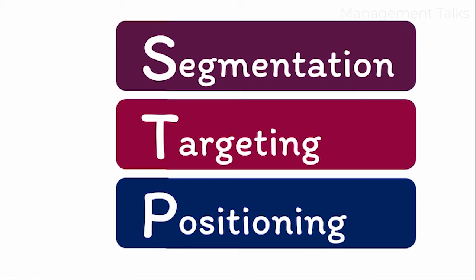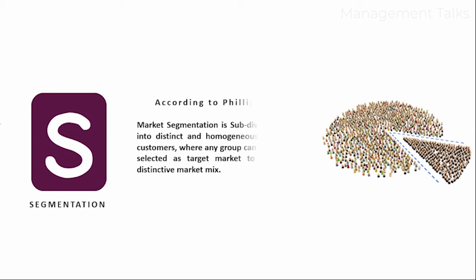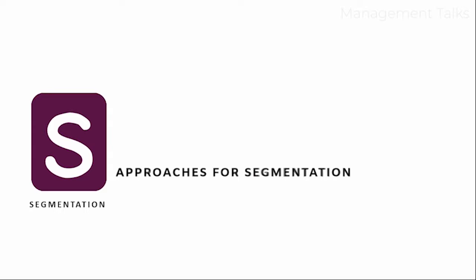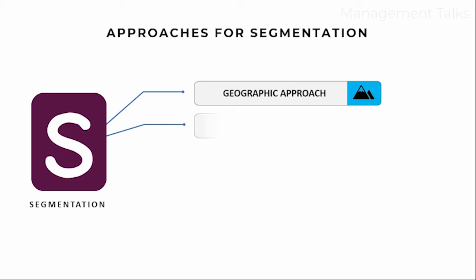The first step of the STP model is segmentation. According to Philip Kotler, segmentation means subdividing the market into distinct and homogeneous subgroups of consumers. In simple words, it is to divide the market on the basis of consumers' characteristics. There are mainly four ways to divide your market into different segments: first, geographic; second, demographic; third, psychographic; and fourth, behavioral segmentation.